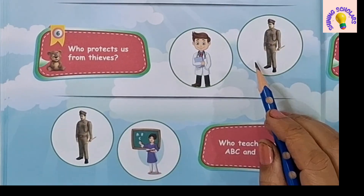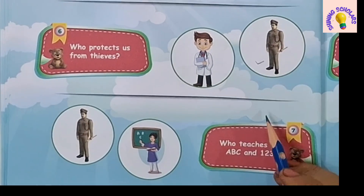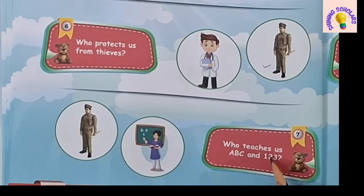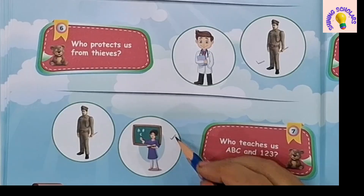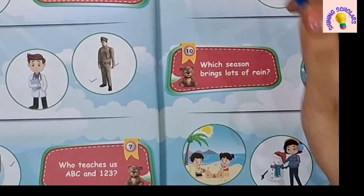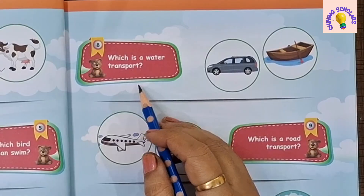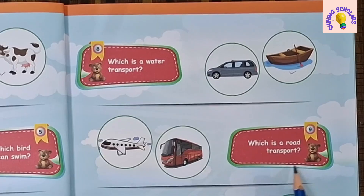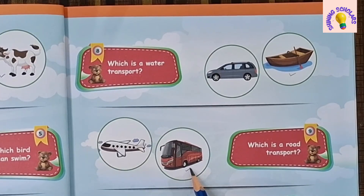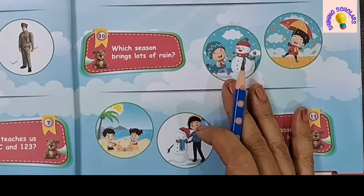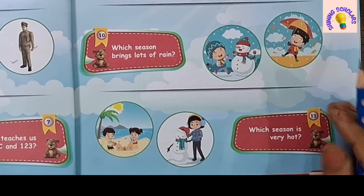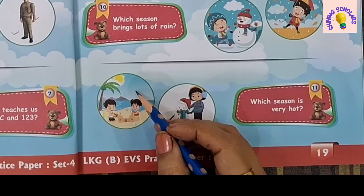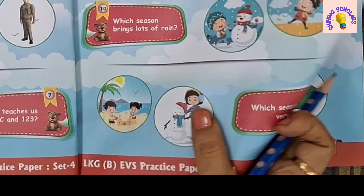Who protects us from thieves? Policeman protects us from thieves. Who teaches us ABC and 123? Teacher teaches us. Which is a water transport? Boat is a water transport. Which is a road transport? Bus is a road transport. Which season brings lots of rain? Rainy season. Which season is very hot? Summer season is very hot.